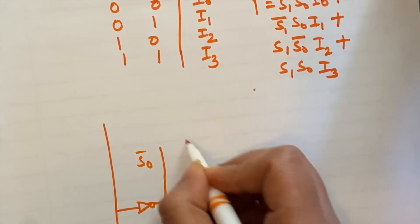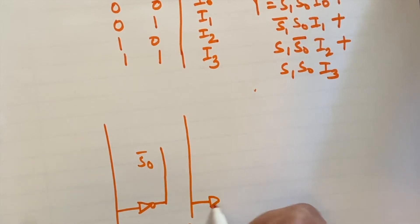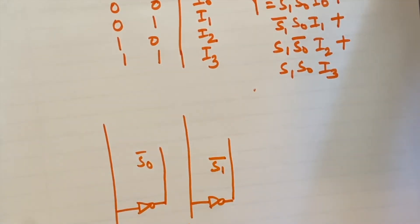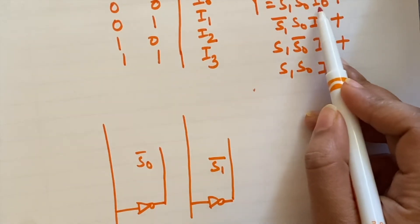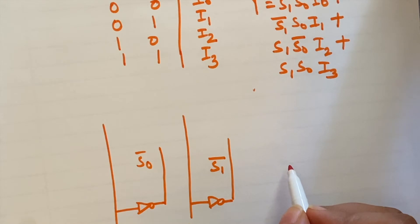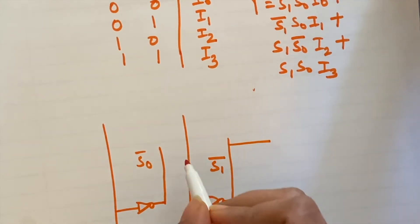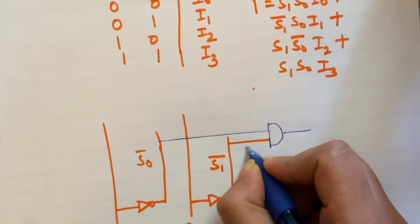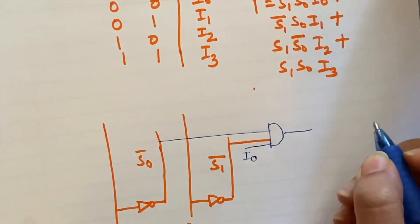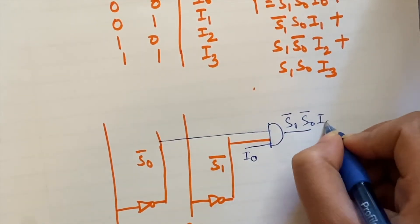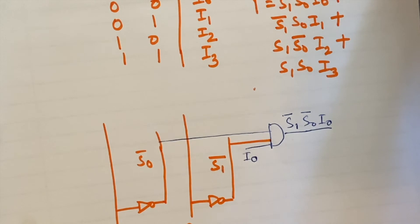Okay, now for the first term, s1 bar s0 bar and i0. So here we will get s1 bar s0 bar and i0. This will be the first term. Now for the second term, s1 bar, this one, s0, means this one s0.